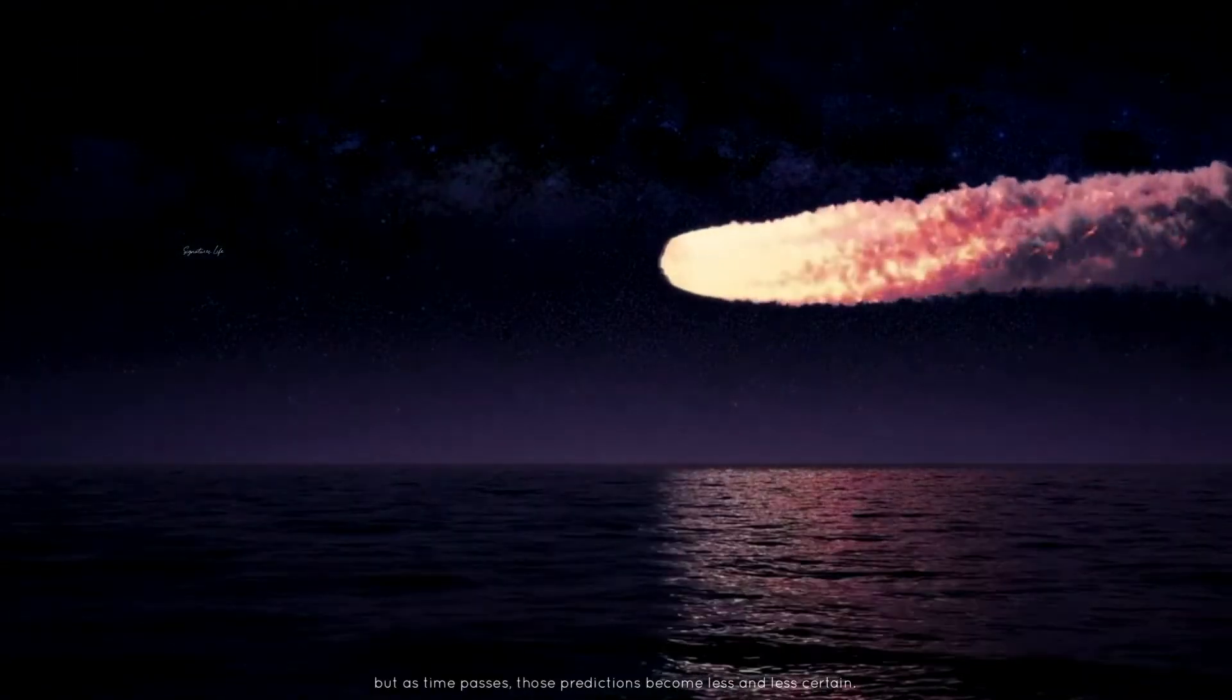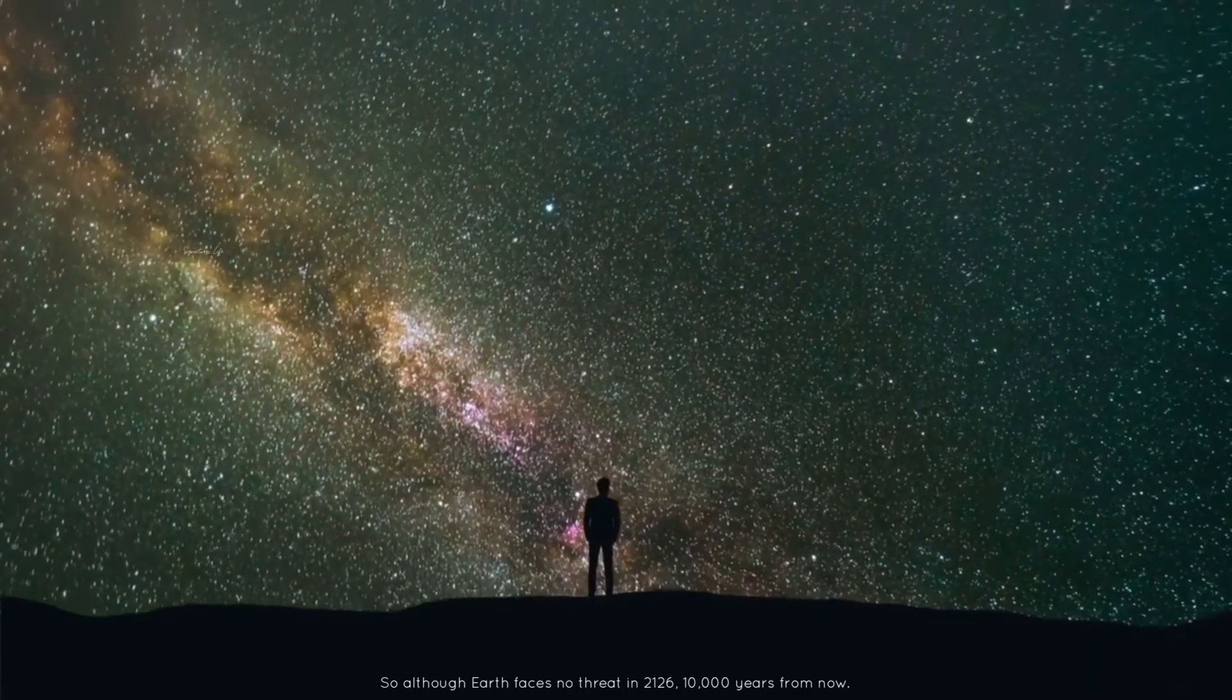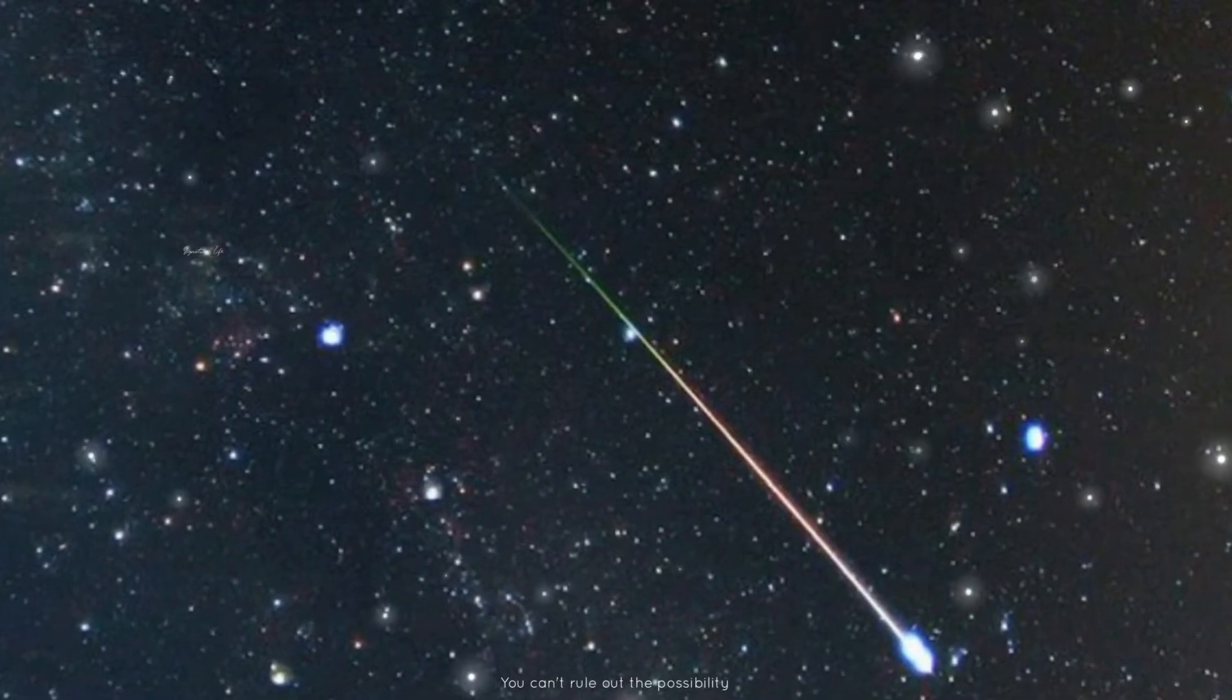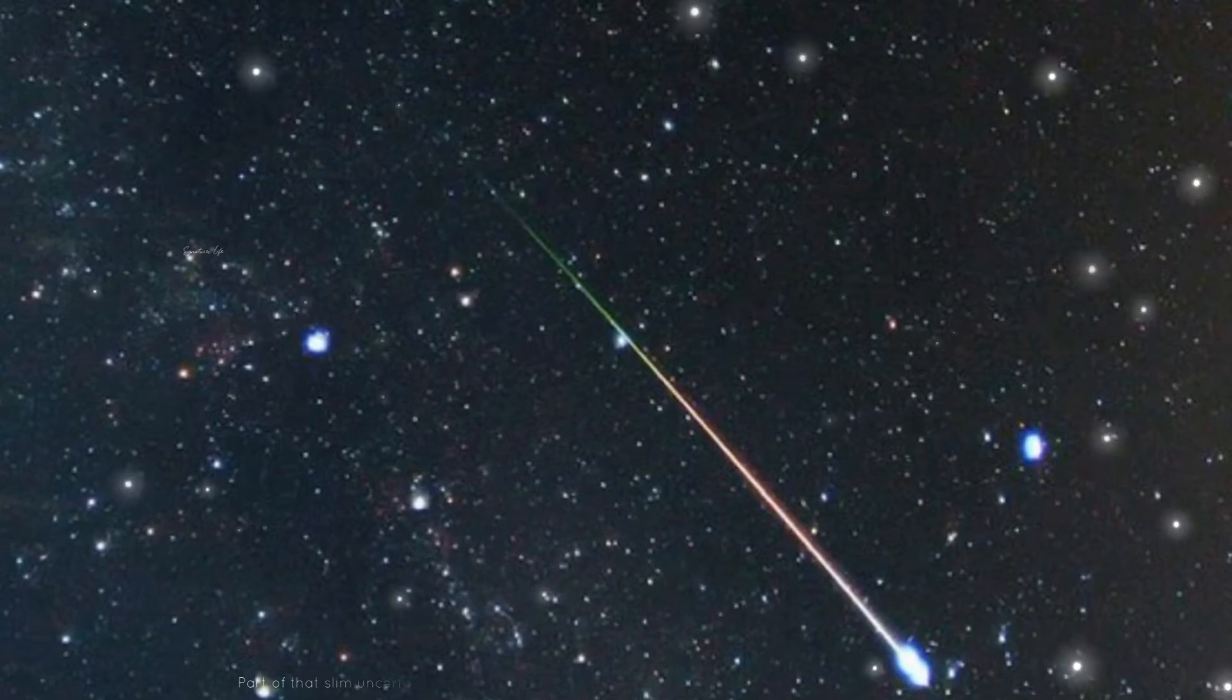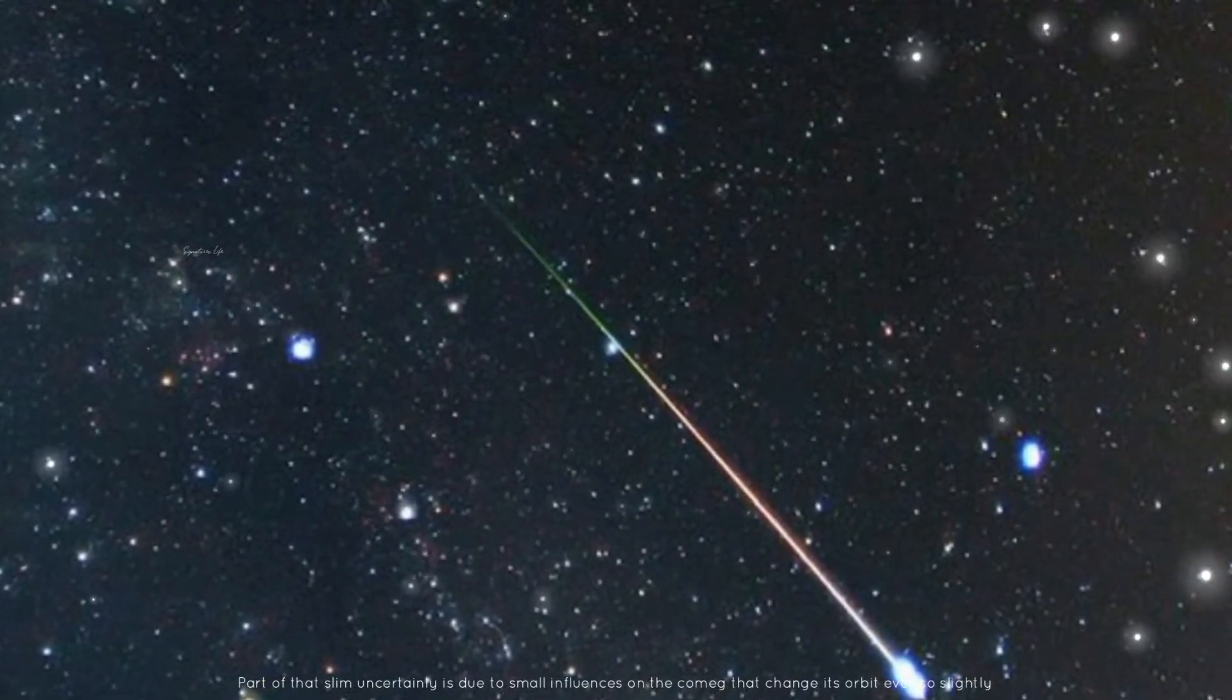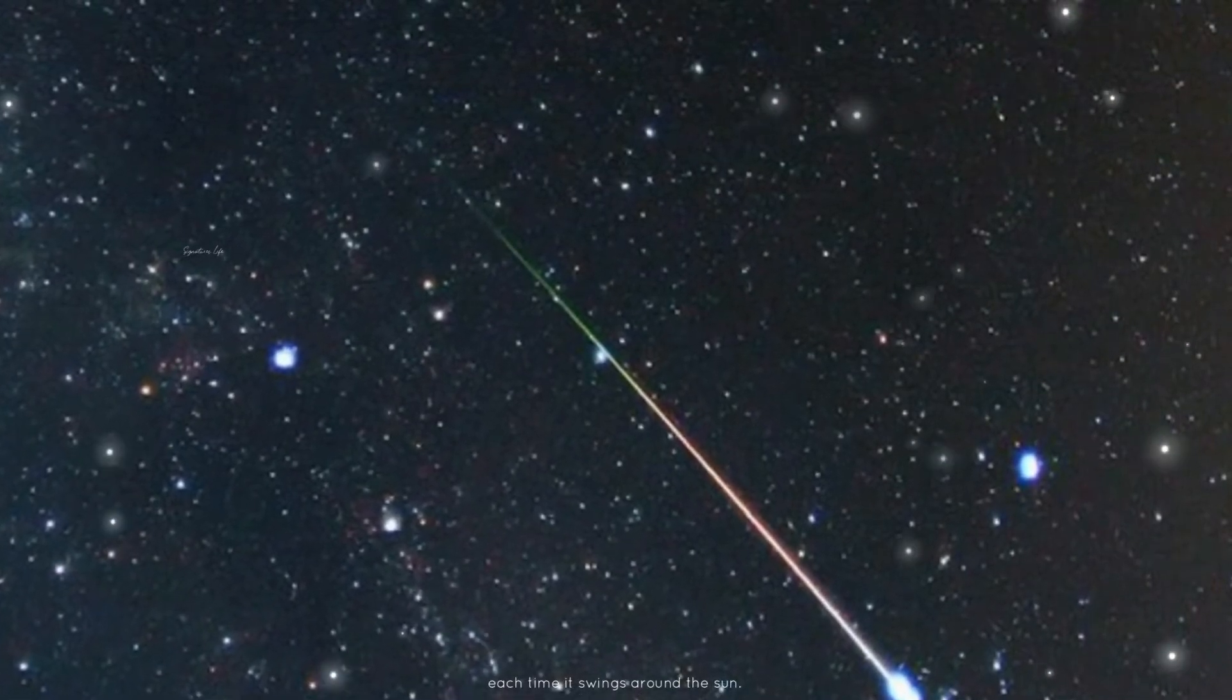But as time passes, those predictions become less and less certain. So, although Earth faces no threat in 2126, 10,000 years from now, you can't rule out the possibility, but it would seem to be very unlikely. Part of that slim uncertainty is due to small influences on the comet that change its orbit ever so slightly each time it swings around the Sun.